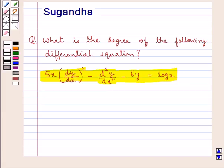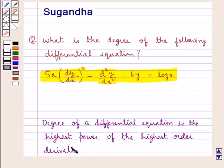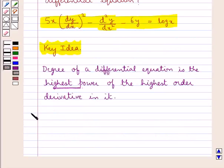Before we move on to the solution, let's see what is the degree of a differential equation. The degree of a differential equation is the highest power of the highest order derivative in it. This highest power is a positive integer, and the degree is always a positive integer. This is the key idea that we use for this question. Let's proceed with the solution now.